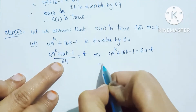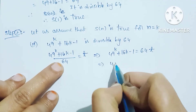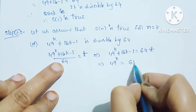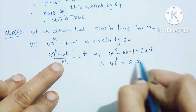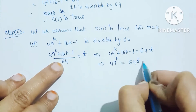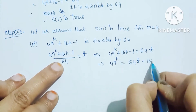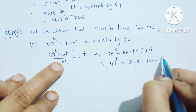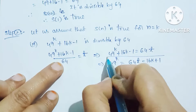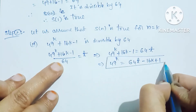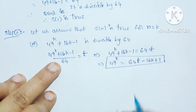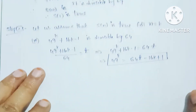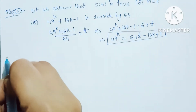Cross multiplying: 49 power k plus 16k minus 1 equals 64 times t. That implies 49 power k equals 64t minus 16k plus 1. This condition will be used in Step 3.